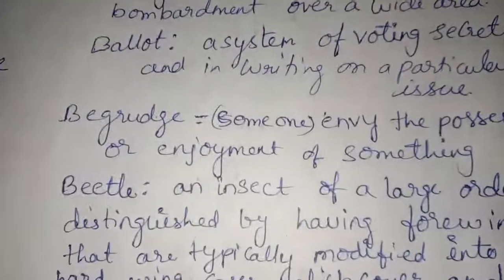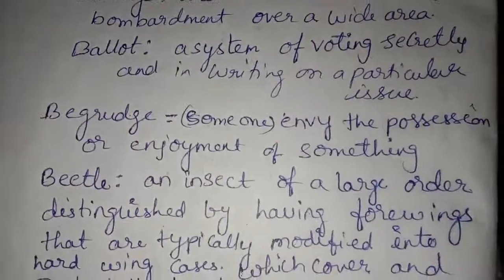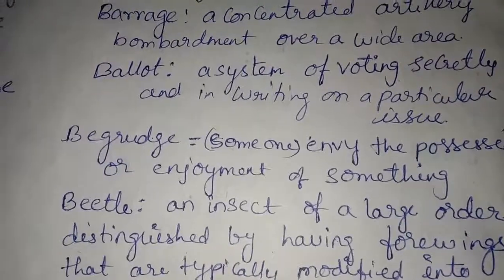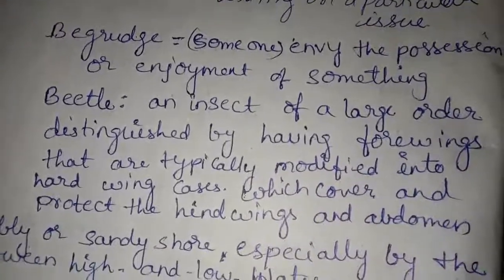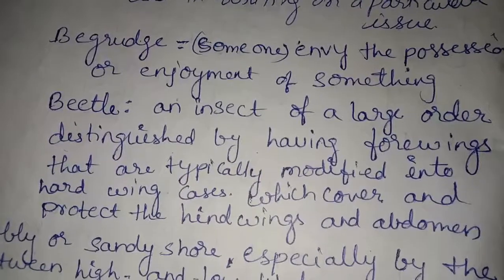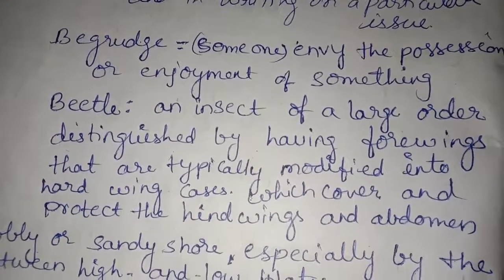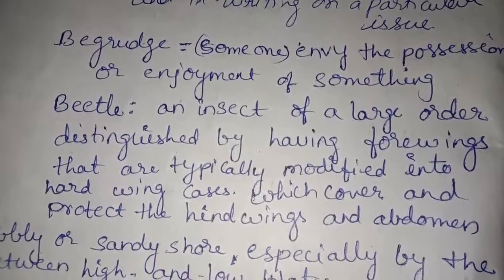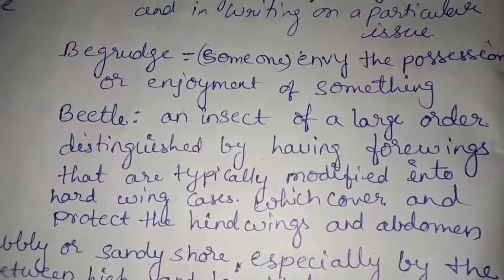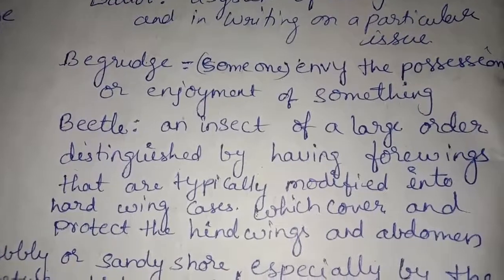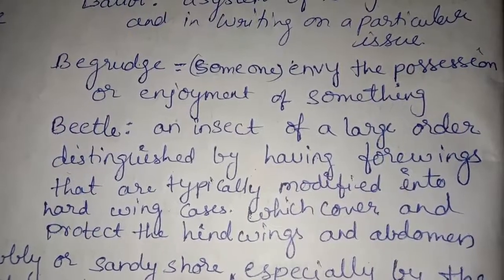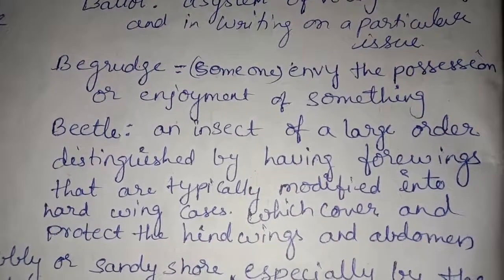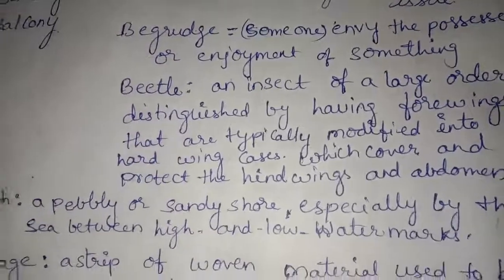Begrudge — envy someone's position or enjoyment of something. Beetle — an insect of a large order distinguished by having four wings that are typically modified into hard wing cases which cover and protect the hind wings and abdomen.